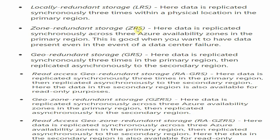As you go from Locally Redundant Storage to Zone Redundant to Geo-Redundant Storage, the cost increases based on the access and replication of your data. The higher the redundancy, the higher the cost — up to Geo-Redundant Storage.